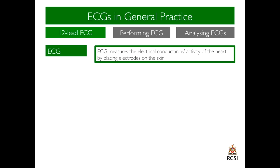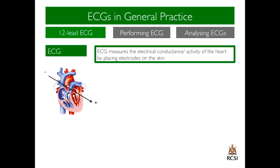An ECG measures the electrical conductance activity of the heart by placing electrodes on the skin. As an example, imagine two electrodes, one positive, one negative. They will assess the electrical activity through the heart in each cardiac cycle. Each cardiac cycle is represented by a series of waveforms.